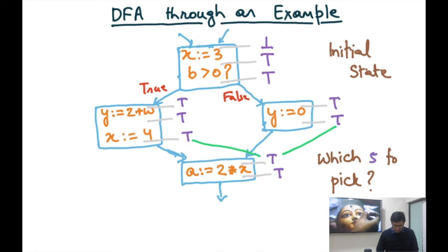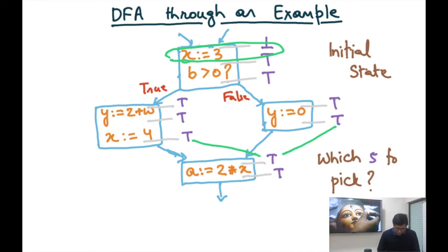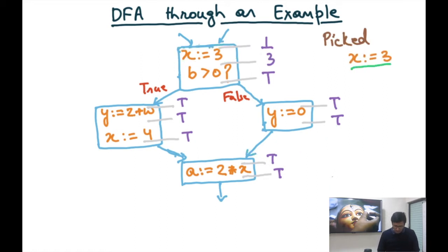You will find that all program points are actually following the rule — there's only one that is not. The first program point is not following the rule because the in is bottom but the out is top. If the in is bottom (meaning the point is reachable), then depending on the statement the out could be a constant or bottom. The statement is assigning the constant 3 to x, so the rule triggers and says the out should be 3. We pick x:=3 and update the out to 3.